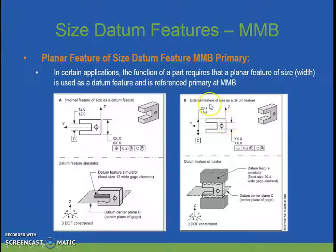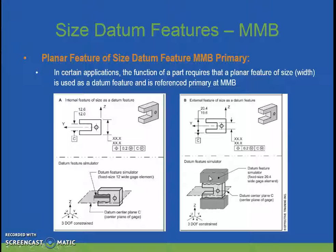Reverse application: we have the external feature of size being specified as your datum at maximum material boundary. So maximum material boundary occurs at 20.4, and here you would have some type of fixed set of parallels or jaws — fixed, they wouldn't move — at 20.4. As this feature of size came away from maximum material boundary, you would have some clearance or slop in the gauge, and that would be allowable.